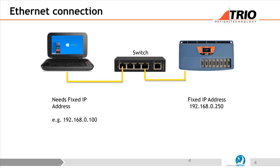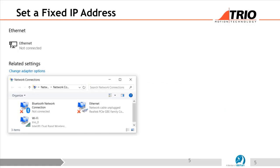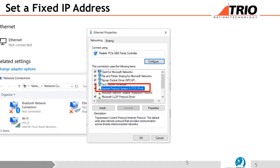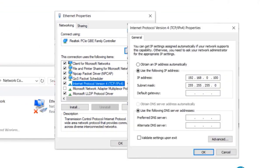To do a direct connection, we need to set a fixed IP address on the PC because it's not being given one by the network. To do that, depending on your Windows version, you go into your change adapter options part of the network settings, choose your Ethernet network, then choose Internet Protocol version 4 and click Properties. You'll find it says 'obtain an IP address automatically', which is the one that gets from the server.